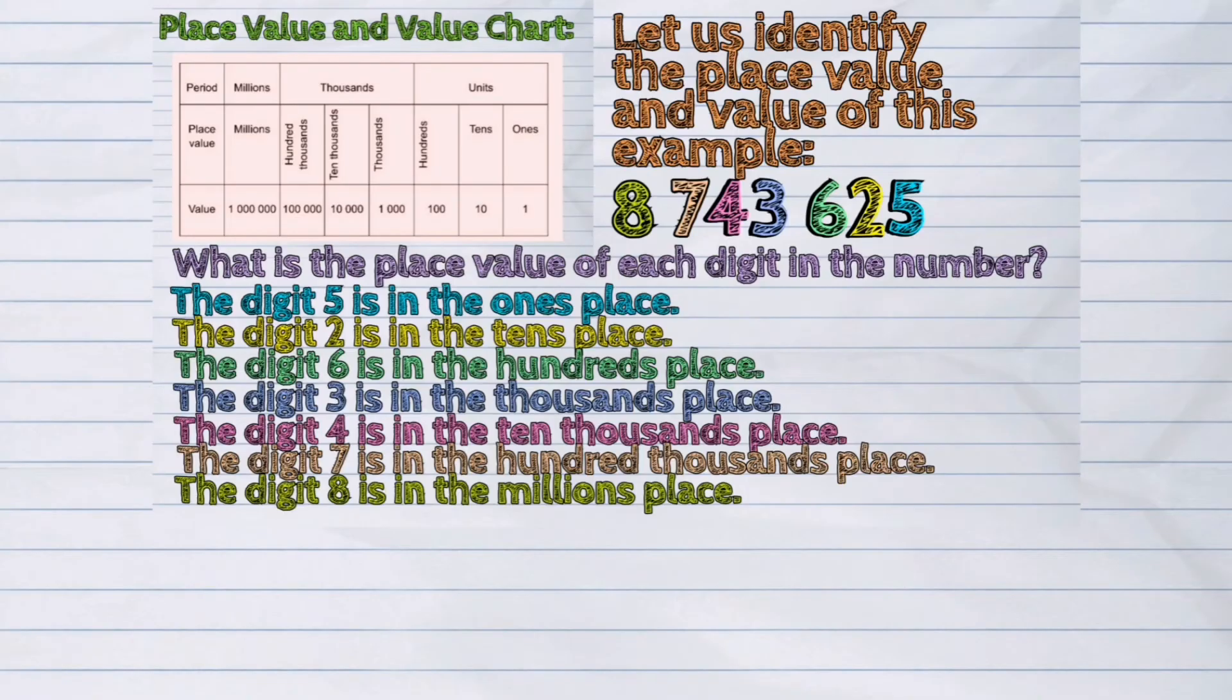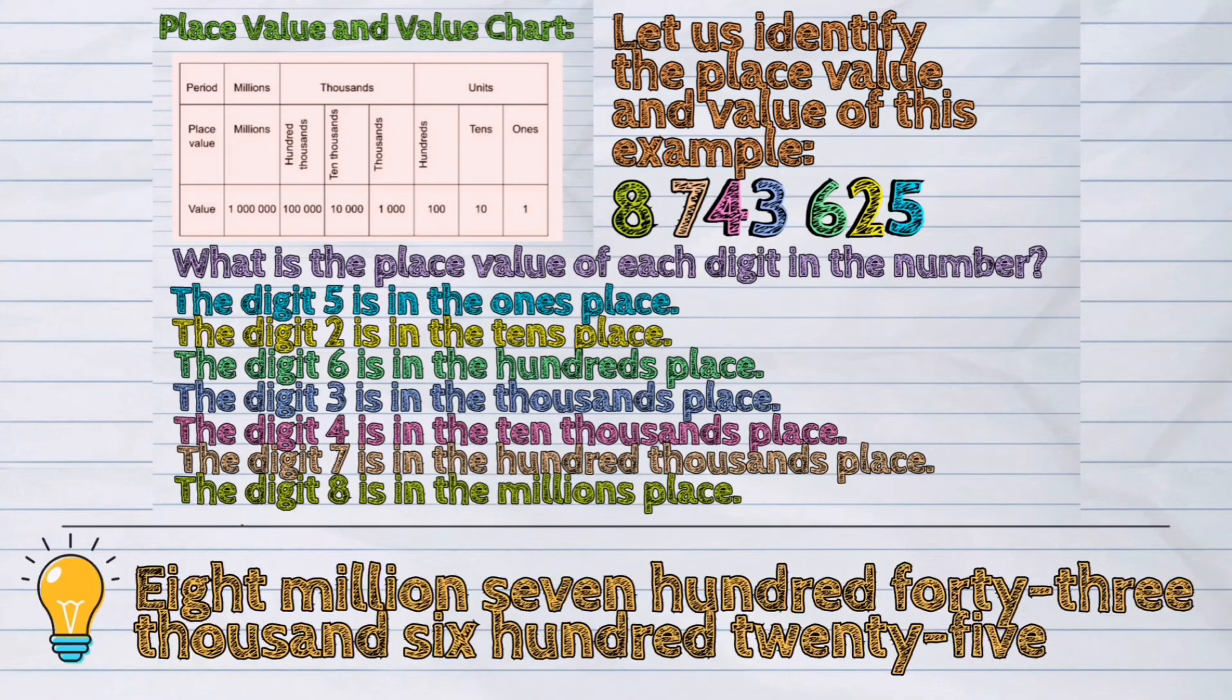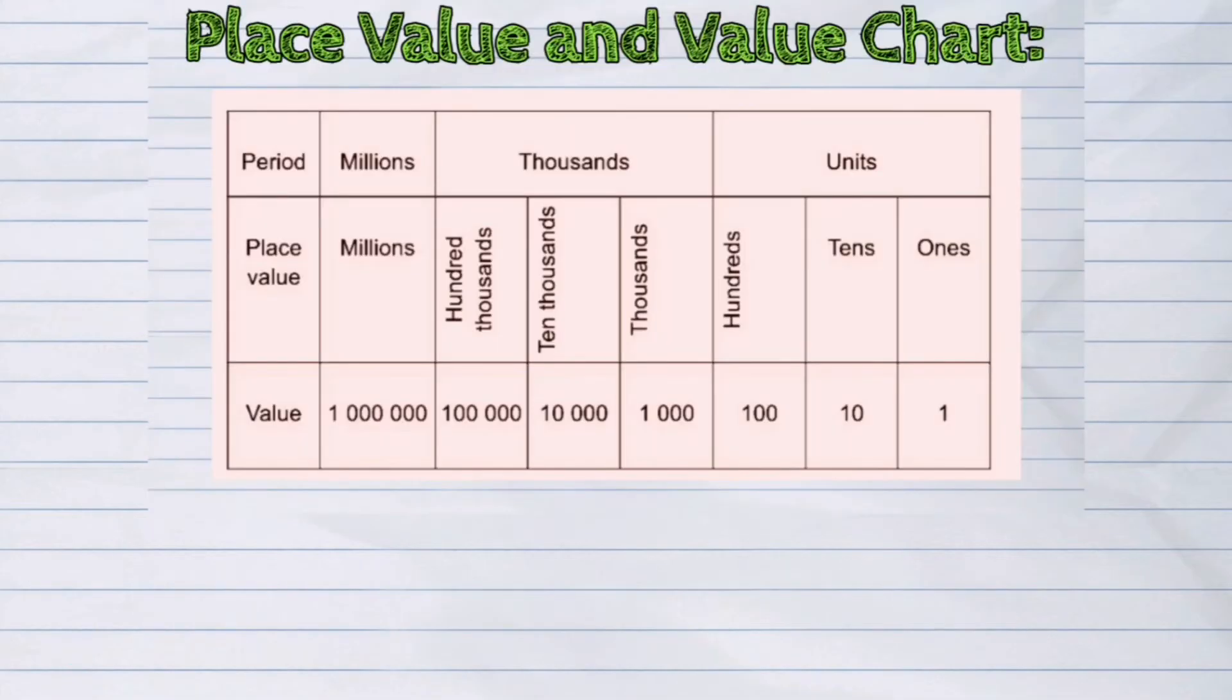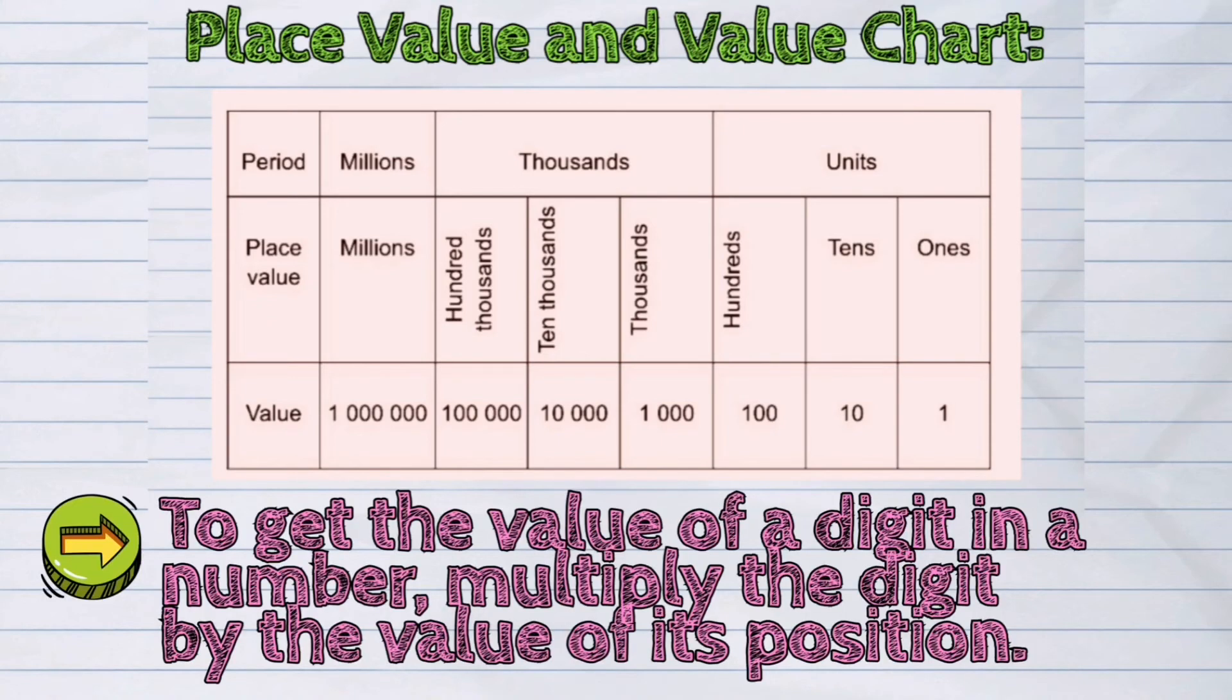We read this number as 8,743,625. Now, let us learn how to get the value of a digit. To get the value of a digit in a number, multiply the digit by the value of its position.